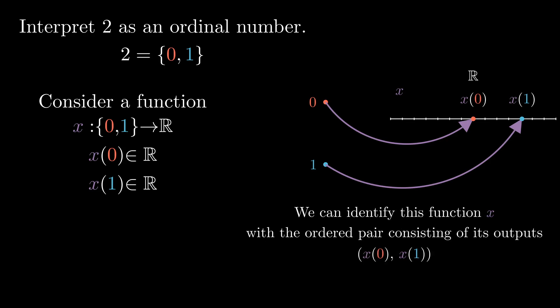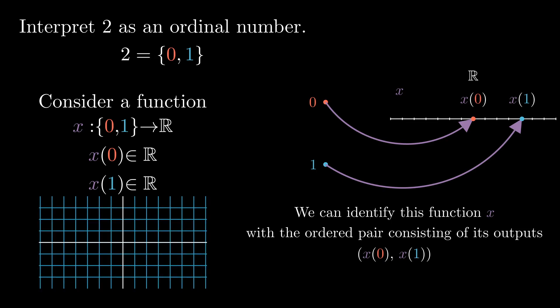We can identify this function x with the ordered pair consisting of its outputs. The first coordinate is x of 0, and the second coordinate is x of 1. In other words, we can think of this function x as being this point in the plane.